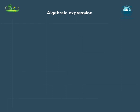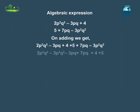The two algebraic expressions to be added are 2p square q square minus 3pq plus 4 and 5 plus 7pq minus 3p square q square. First, arrange the like terms together like this. After arranging, you have 2p square q square minus 3p square q square minus 3pq plus 7pq and plus 4 plus 5.